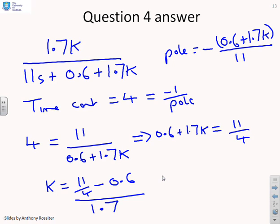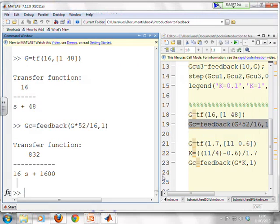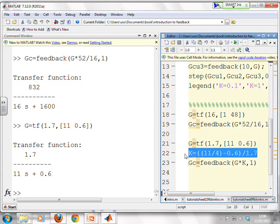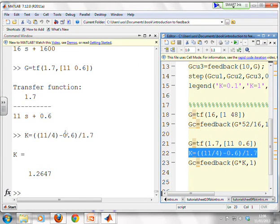So here's my g. Let's enter that first. You can see 1.7 over 11s plus 0.6. Here's my k using that formula, which we've just written. You'll see 11 over 4 minus 0.6 divided by 1.7. So that gives k of 1.2647.